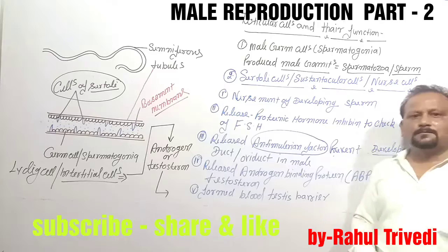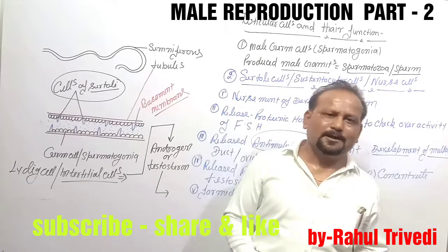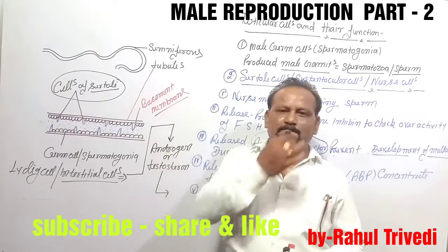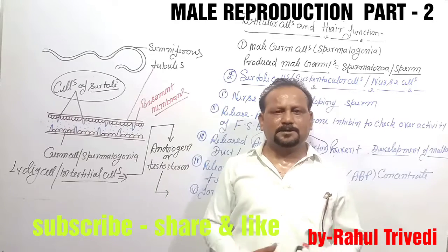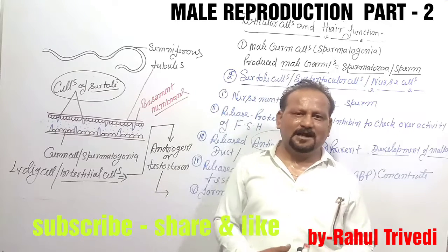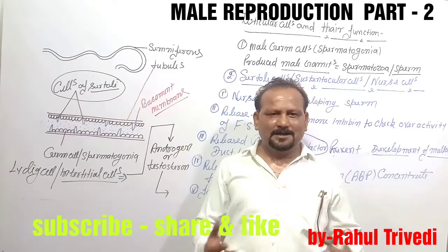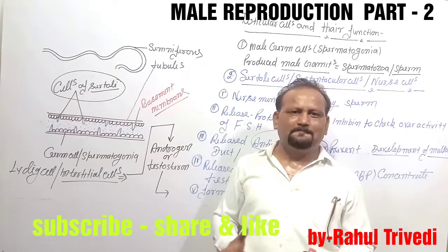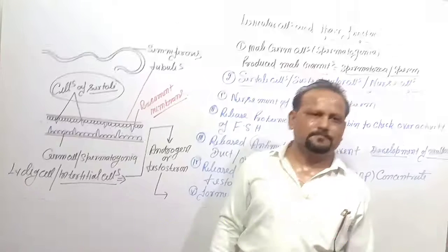That concludes today's video. In the next video we will meet again, and from now on regular videos will be uploaded. In the next video we will discuss the extra-testicular duct system — including the epididymis, vas deferens, ejaculatory duct, urethra, and more — as the remaining part of the male reproductive system in part three.